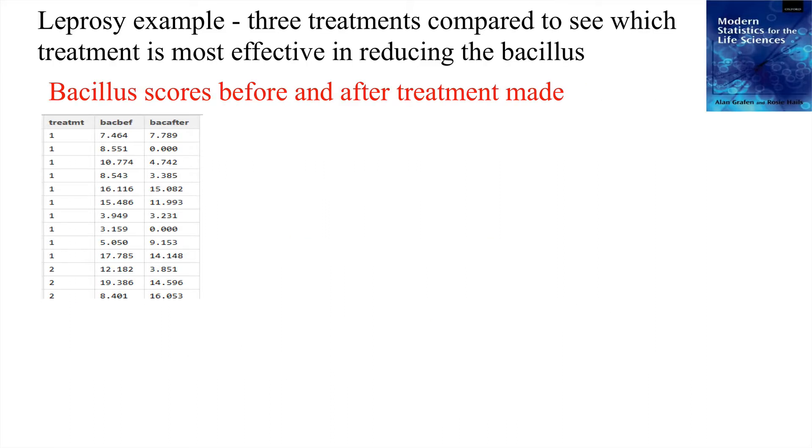We'll have a look at the leprosy example in a lot of detail in the practice and also on the website. But here for now I'm just going to introduce the concepts. This is a really nice dataset which came from Grafen and Hales, Modern Statistics for the Life Sciences. It's a dataset relating to the bacillus scores of leprosy patients before and after treatment. Leprosy is of course caused by a bacillus.